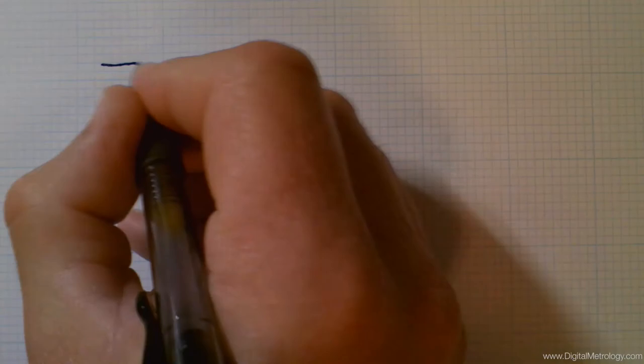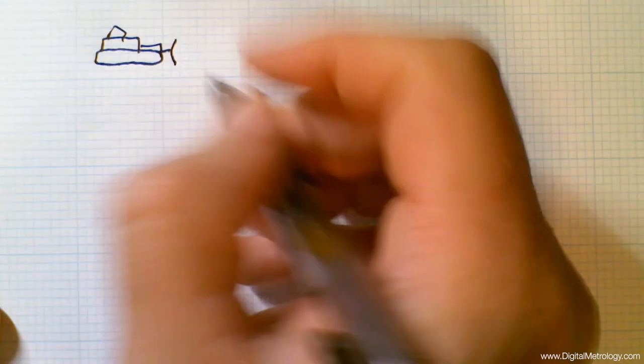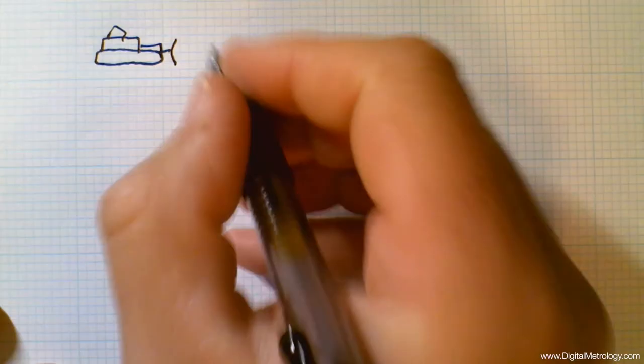Have you ever watched a bulldozer out in a field doing its thing? You know, rattling along, plowing up the world, and perhaps making things into a better place? Well, let's think about that from a surface texture perspective though.